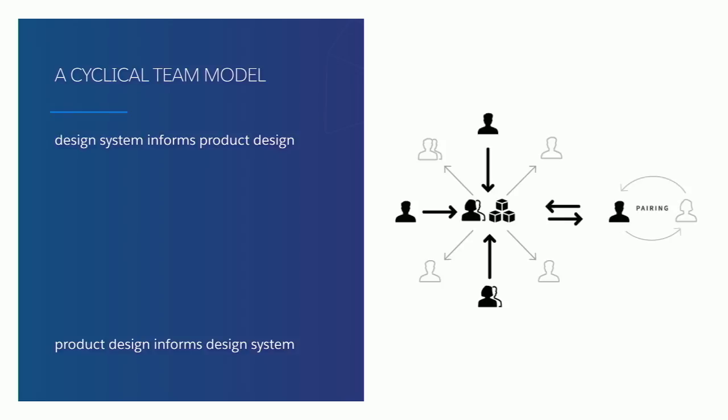If you're in a really small organization you might not be able to build out entire team structures like this. What might work for you is more of that federated model — getting people from your design, engineering, and research teams to collaborate and work together on the design system. If you're on a much larger scale like I am, something more like a cyclical team model might work better.